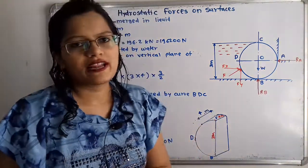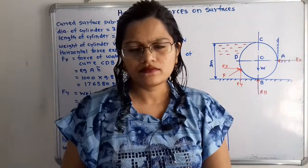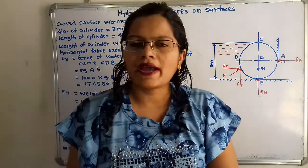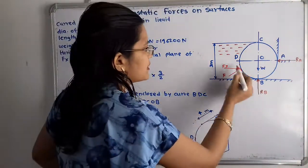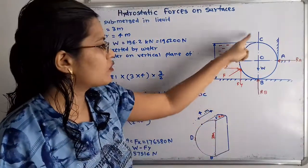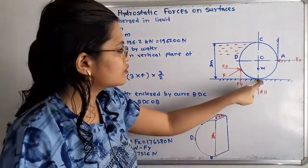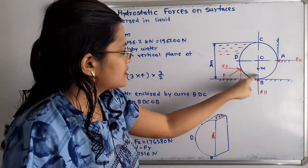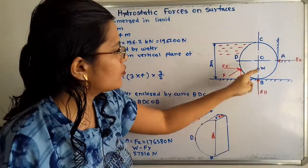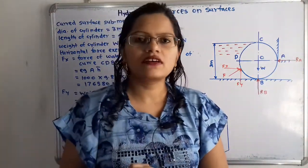Now we calculate FY, the vertical component of the force. FY equals the weight of water enclosed by the curve BDC. Curve BDC is taken because it is in contact with water. Since the curve is open at points B and C, we join these two points to enclose the area. The enclosed area is BDCOB, and we find the weight of water within this enclosed area.